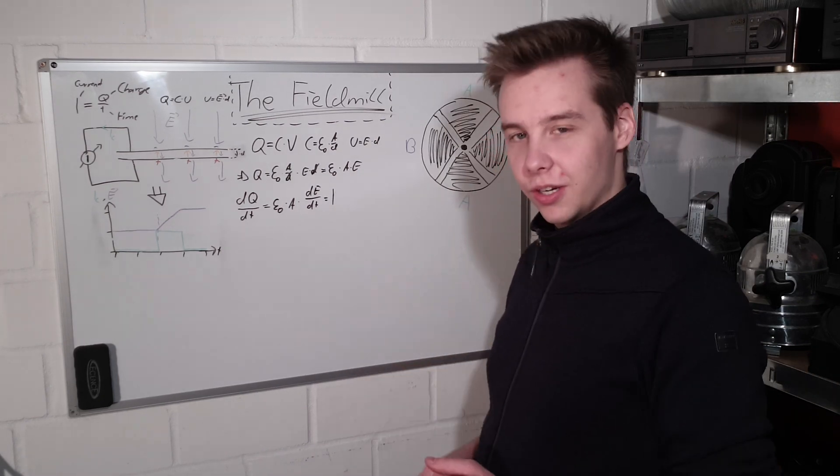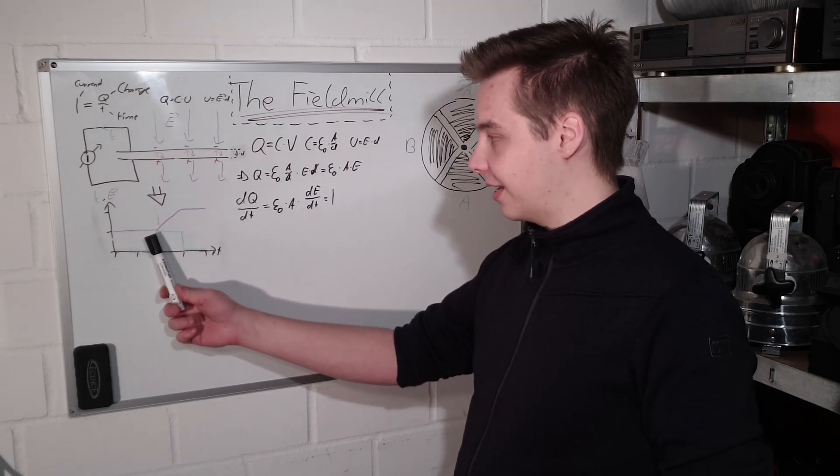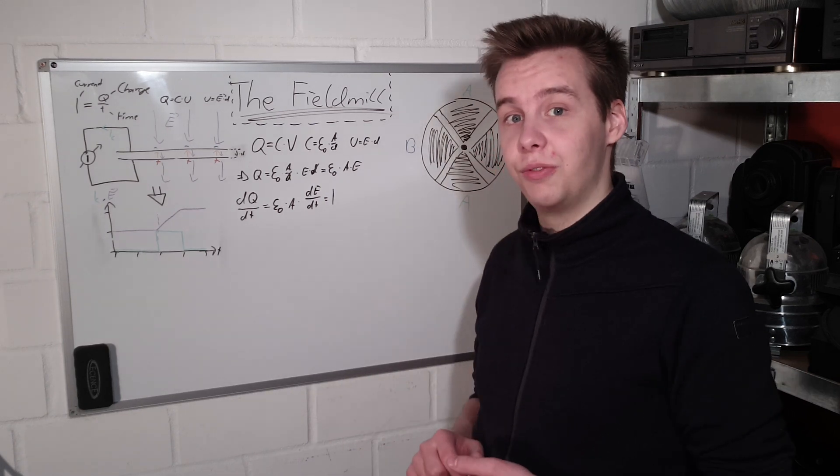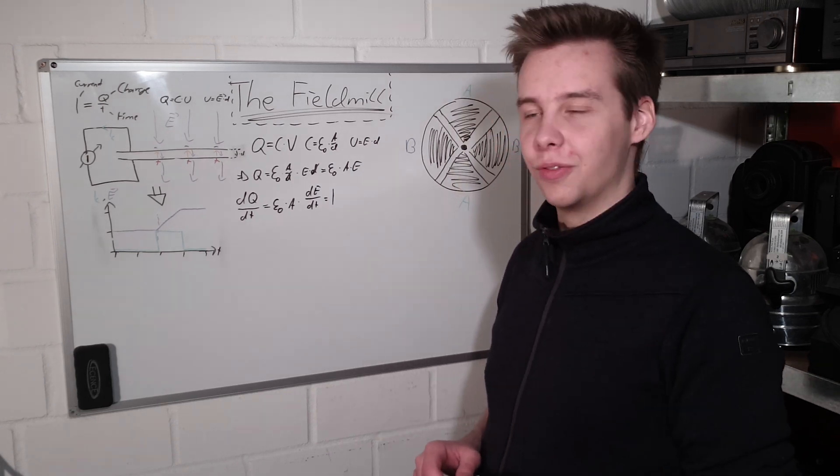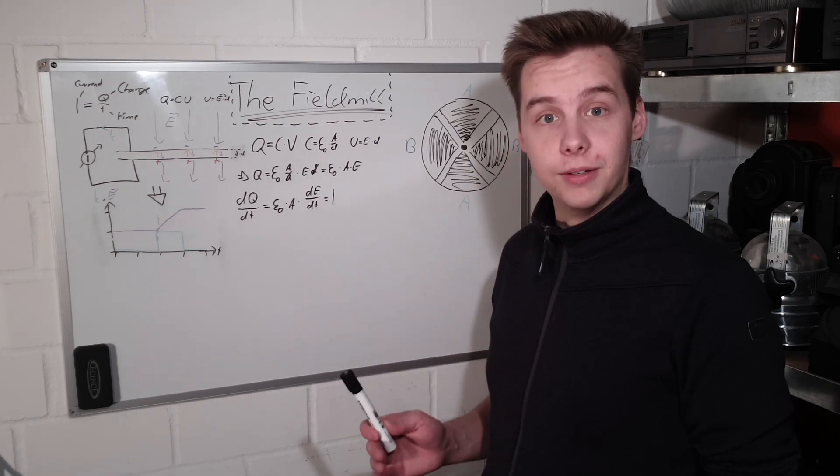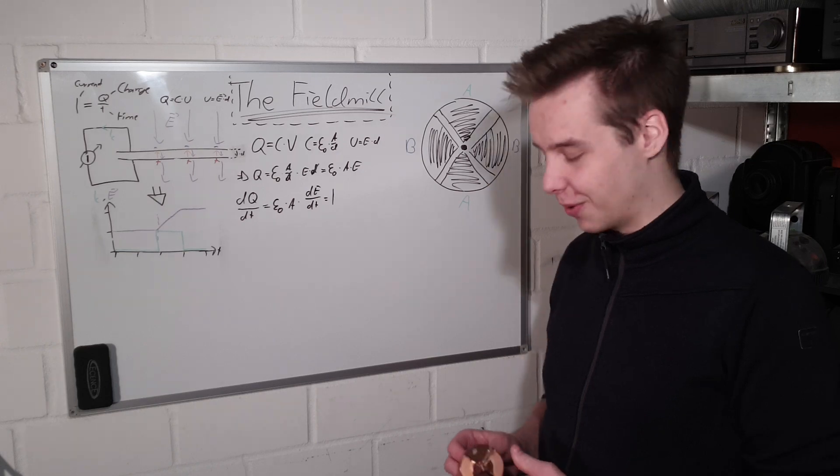Now, there's already one major issue that you can see with this, and that is the fact that if the field is steady, there's no change in the field, the output current is zero. So that basically means we are unable to measure fields that aren't changing. But we would want to do that in certain circumstances, for example, if we wanted to measure the field generated by clouds. So how do we do it? Well, quite simple. We just simply take the static field and turn it into a changing one.